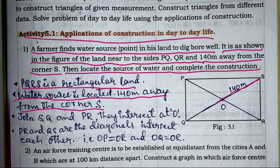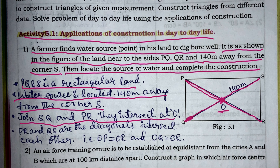We have to take a line that joins point Q, then join SQ and RS — they intersect at O. We have to join PR also; it will intersect at point O as well. So we got the point O — this is where the water source is located.